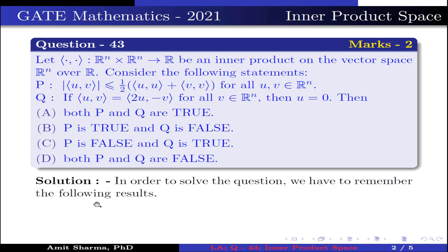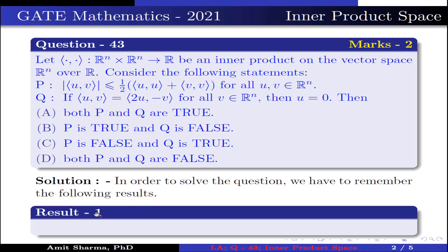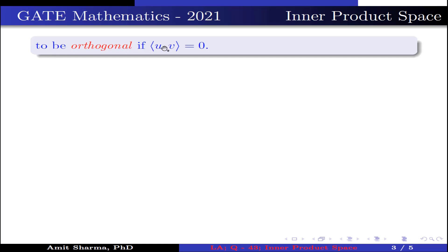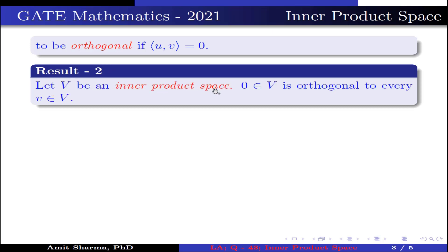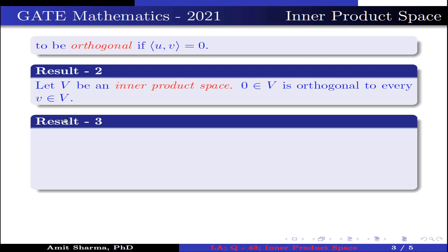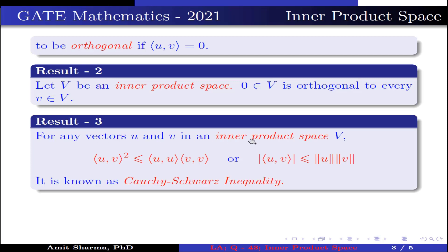In order to solve the question, we have to remember the following results. Result 1: let V be an inner product space; vectors u, v belonging to V are said to be orthogonal if ⟨u, v⟩ = 0. Result 2: the zero vector 0 in V is orthogonal to every vector v in V. Result 3: for any vectors u and v in an inner product space V, ⟨u, v⟩² ≤ ⟨u, u⟩·⟨v, v⟩, or equivalently |⟨u, v⟩| ≤ ‖u‖·‖v‖. This is known as the Cauchy-Schwarz inequality.